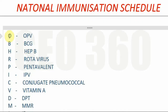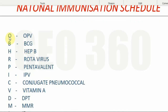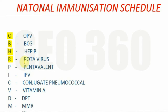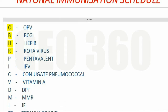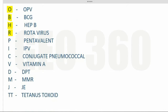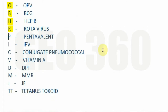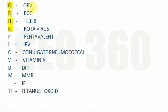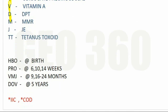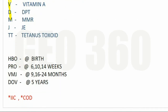The basic principle of this mnemonic is that you have to remember the first letter of each vaccine. For example, for OPV — oral polio vaccine — the first letter is O. For BCG — Bacillus Calmette-Guérin vaccine — it is B. For Hepatitis B it is H. For Rotavirus it is R, and respectively for all the vaccines. So remember just the first letter of each vaccine name. After that you have to remember 4 mnemonics: HBO, Pro, VMJ, and DAO.